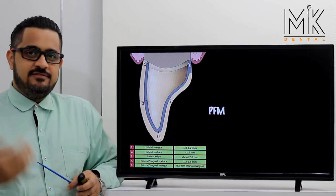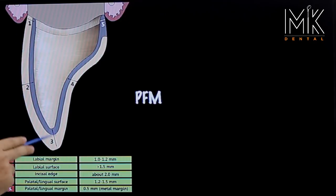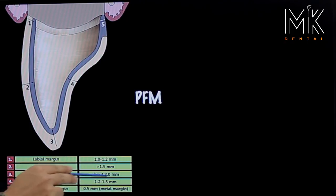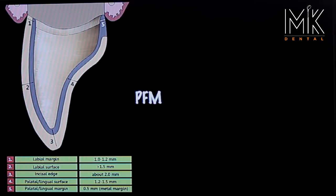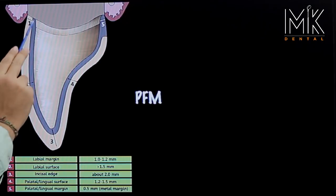Let's first look at PFM-based restorations. I have numbered the different areas of the tooth, and these numbers in millimeters will tell you the amount of tooth reduction required. These are all average, idealistic values based on the prosthetic material. In practice we don't always get exact values, but these give us the essential baseline understanding we need to achieve preparations as close as possible to these targets.